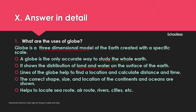With a globe, we can find the location and calculate distance and time. With latitude and longitude, we can find location, distance, and time. The current shape, size, and location of continents and oceans are known. It helps to locate sea routes, air routes, rivers, and cities.